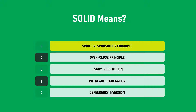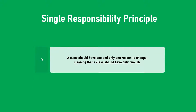Now let's look at what is Single Responsibility Principle. The definition says a class should have one and only one reason to change, meaning that a class should have only one job. Have a look at the underlined code — a class should have only one job. What does that mean?